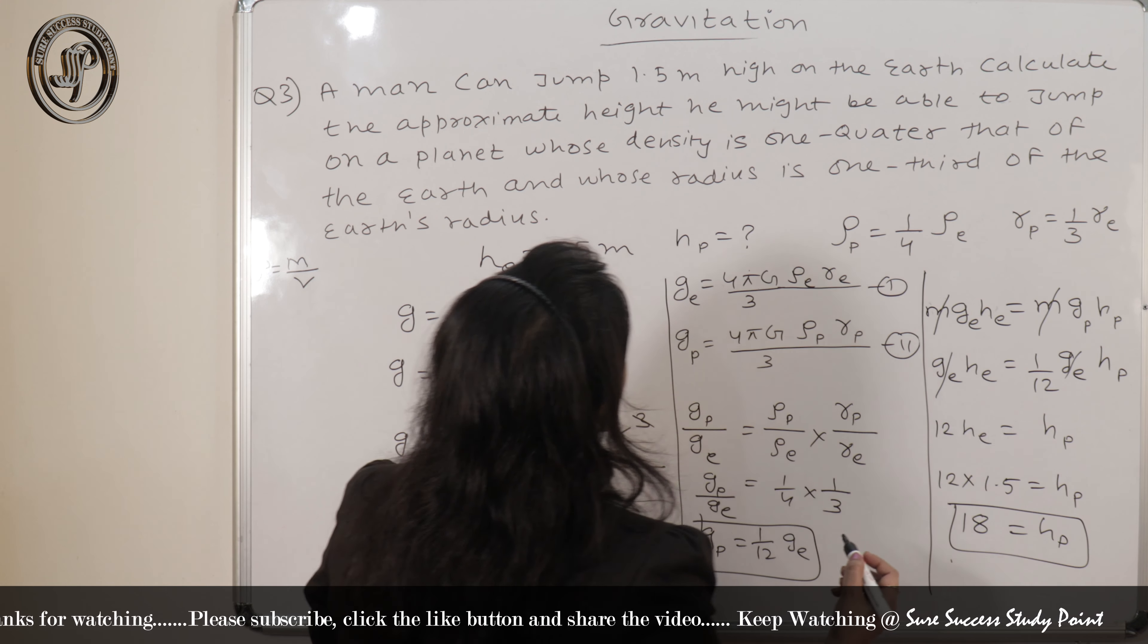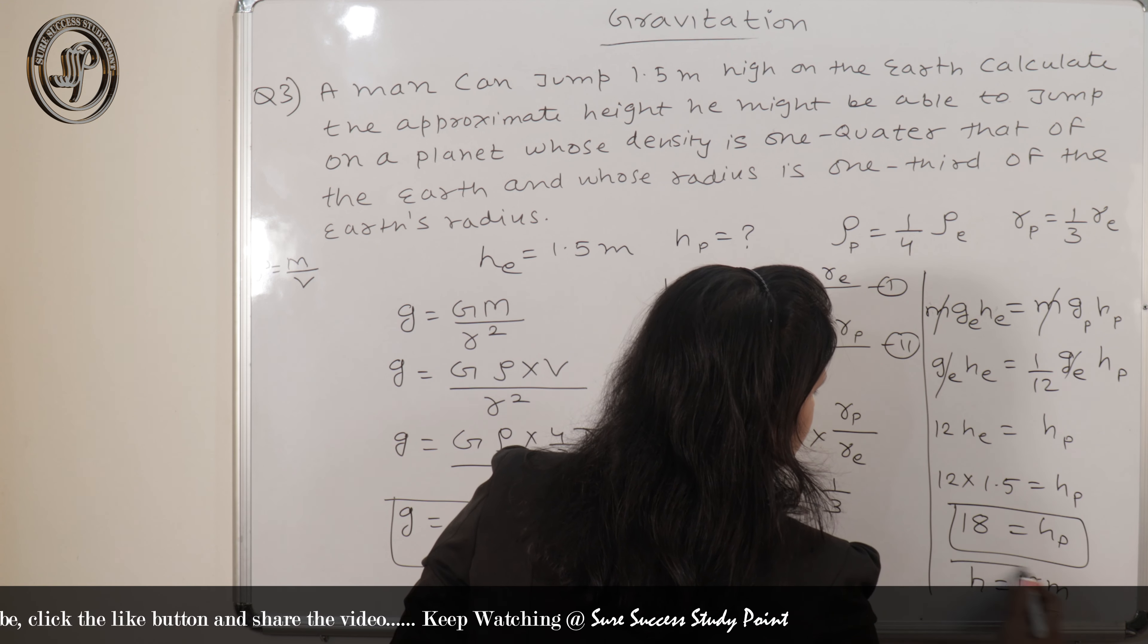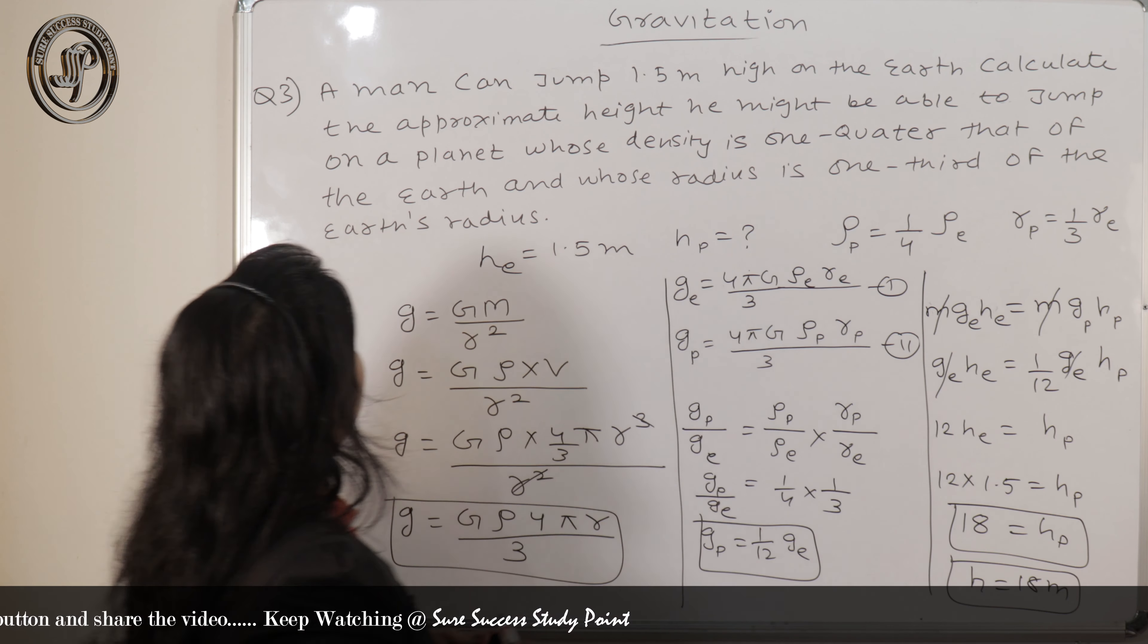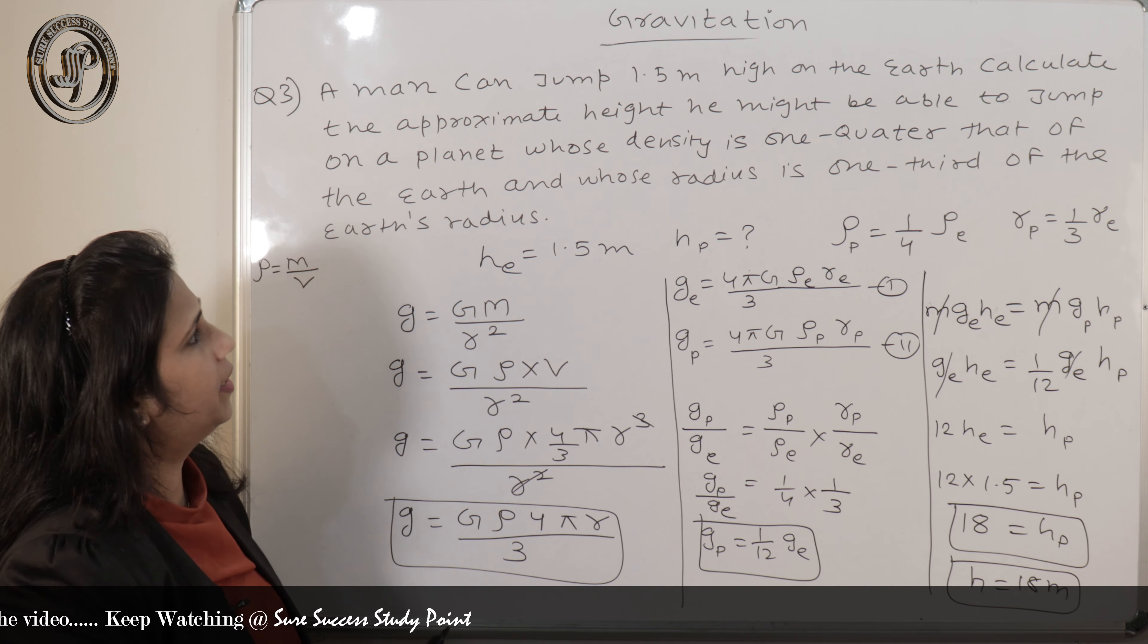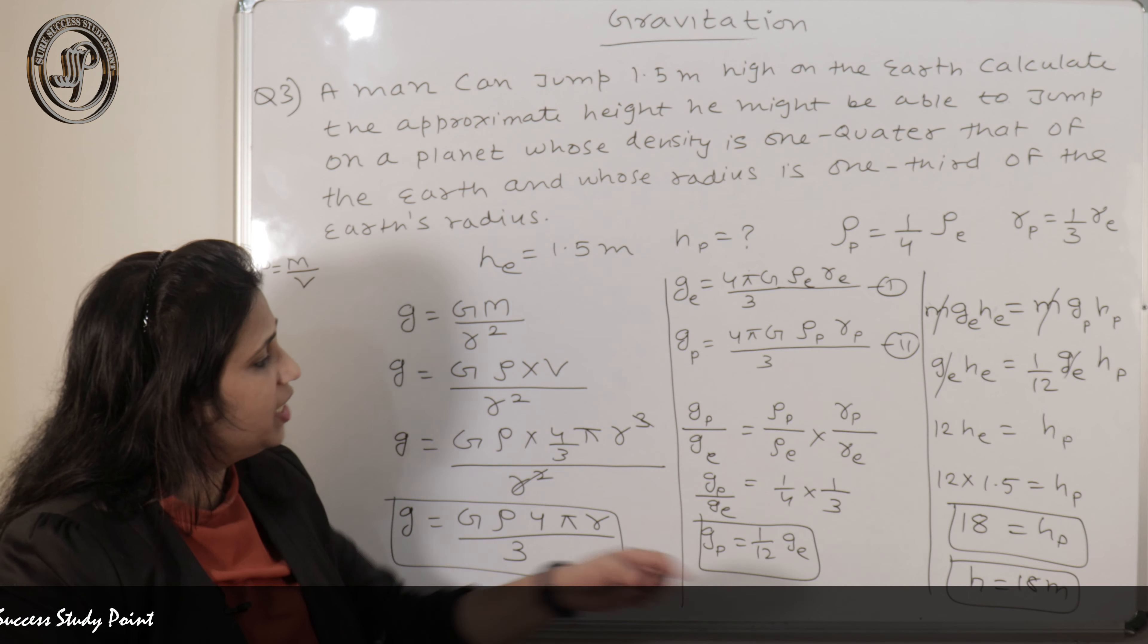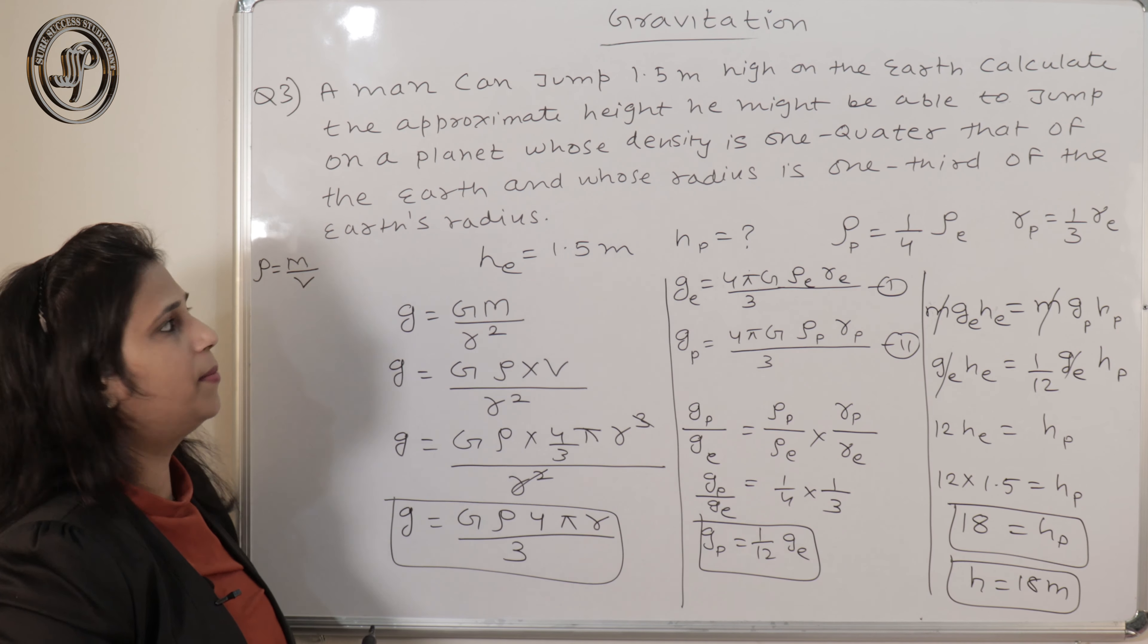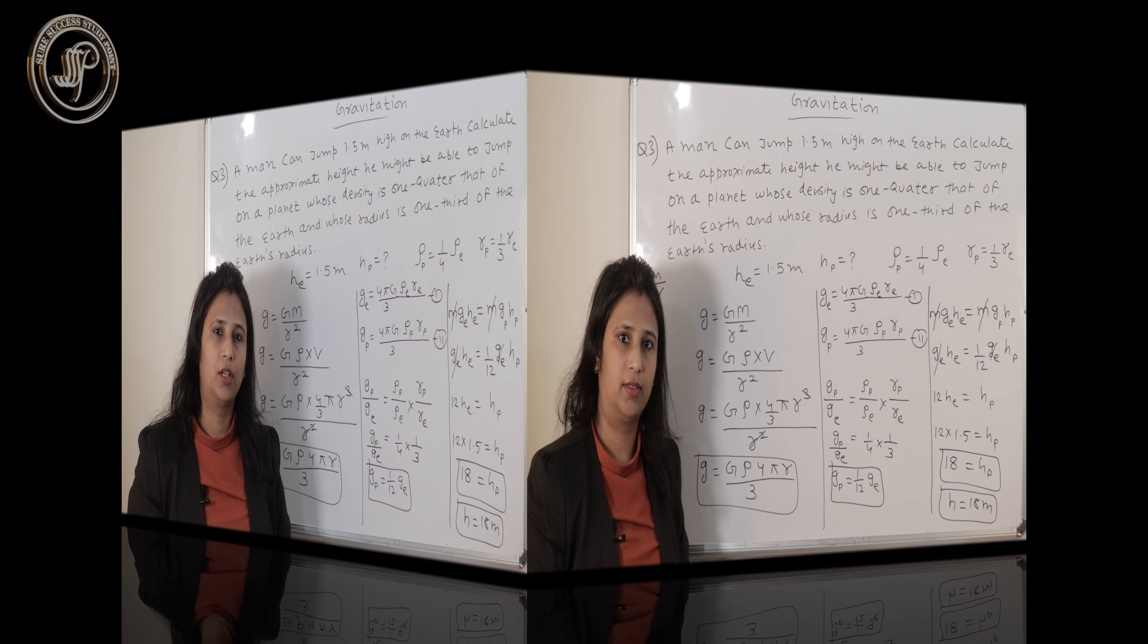So if we assume that man puts the same energy in jumping high on the earth and on that planet also, then we can take m g_e h_e equal to m g_p and h_p. Mass remains the same, mass doesn't change on any planet, so this will cancel out. So g_e h_e. Now I can put the value of g_p, that will be 1 by 12th of g_e h_p. G_e also cancel out. So 12 h_e equal to h_p, 12 into h_e is given, that is 1.5, h_p. If you multiply this you will get 18. So man can jump, height will be 18 meter. So the approximate height he might be able to jump on that planet will be 18 meter if he can jump 1.5 meter high on the earth.